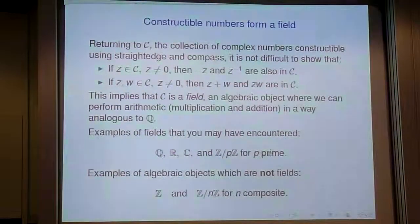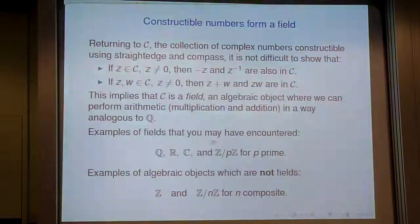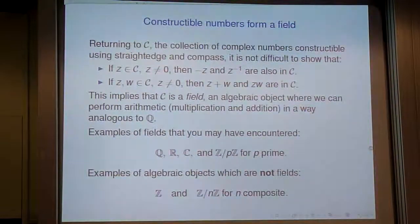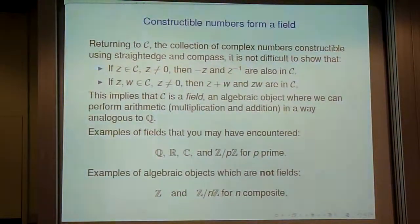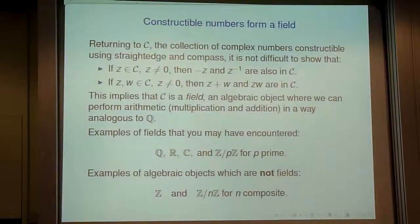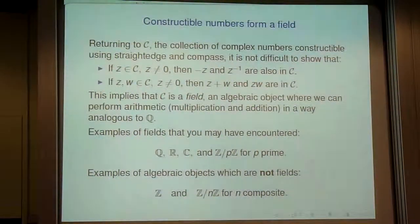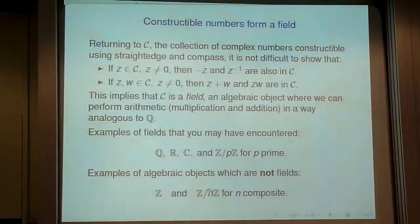Some familiar examples of fields: the rationals ℚ, the reals ℝ, the complex numbers ℂ, and ℤ/pℤ where p is a prime — integers modulo a prime is actually a field. Some objects that are not fields: the integers ℤ, because you can't take inverses and stay in ℤ (the inverse of 2 is 1/2, a rational, not an integer). Similarly, ℤ/nℤ when n is composite has the same problem — for example, there's no integer that when multiplied by 2 gives remainder 1 mod 6.